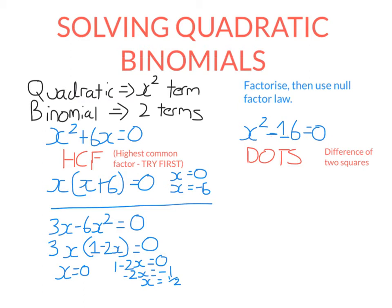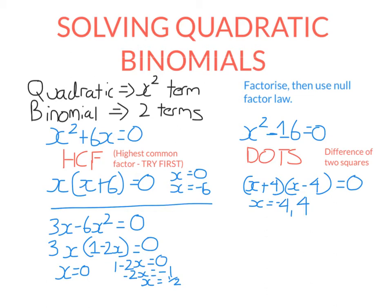Now let's look at x squared minus 16 equals zero. I can't use highest common factor here — x squared and 16 have no common factors. But I can use difference of two squares, which you use when you have a perfect square minus a perfect square. 16 is a perfect square because it's 4 squared. You make two brackets, square root the first — square root of x squared is x — square root the second — square root of 16 is 4 — one bracket gets a plus, one gets a minus. Either x plus 4 equals zero, giving x equals minus 4, or x minus 4 equals zero, giving x equals positive 4.